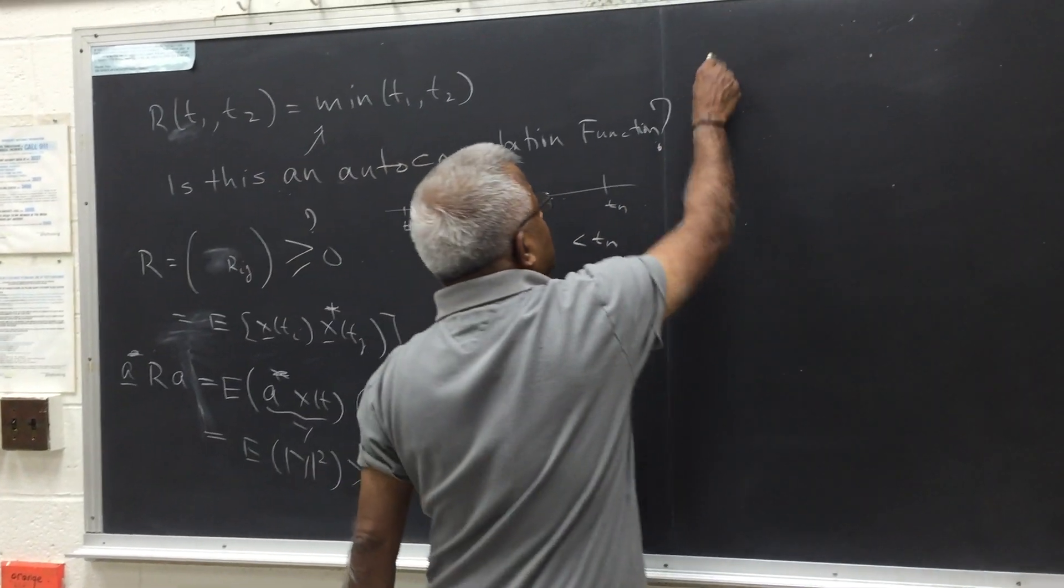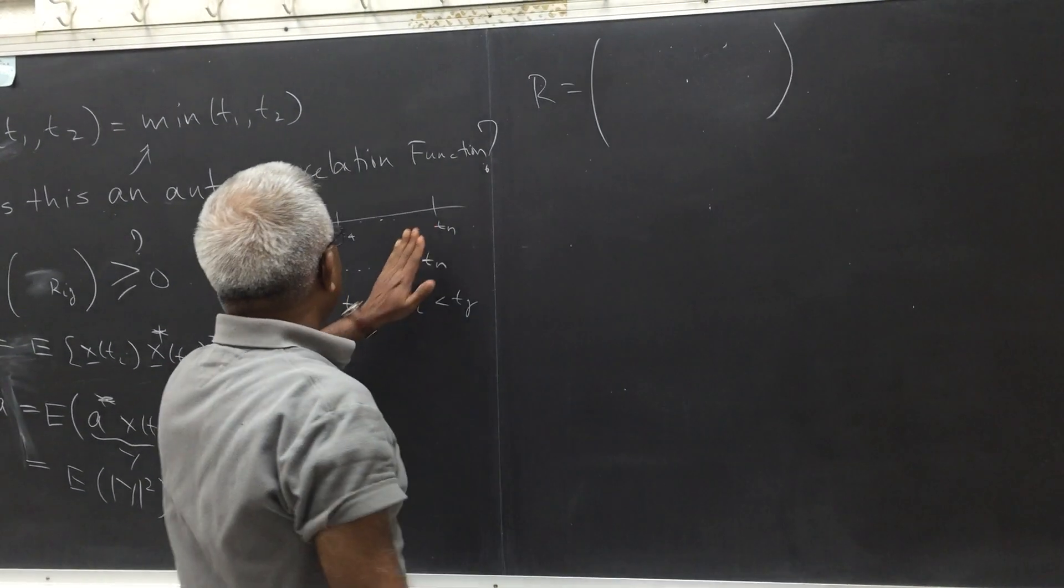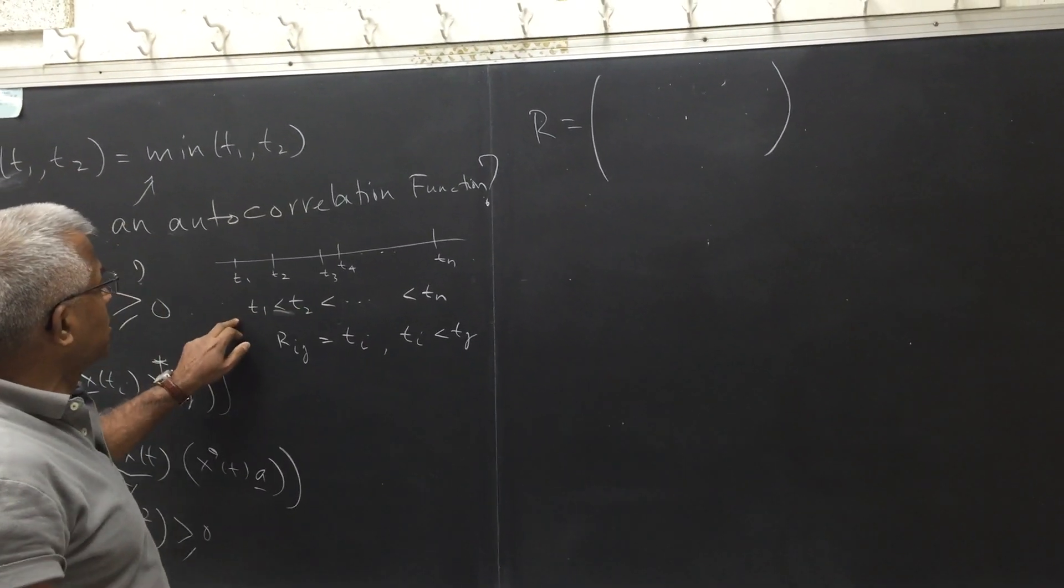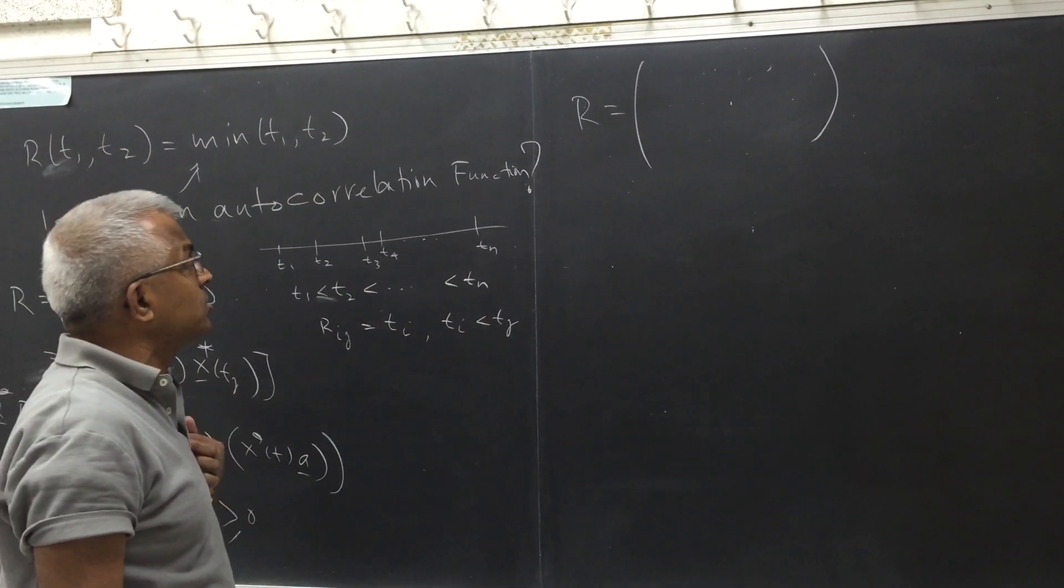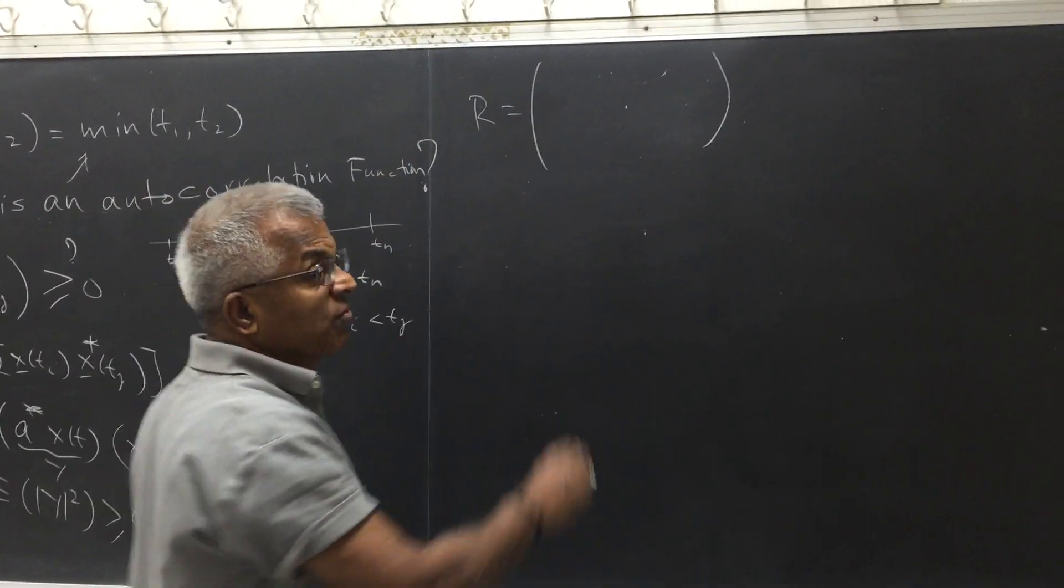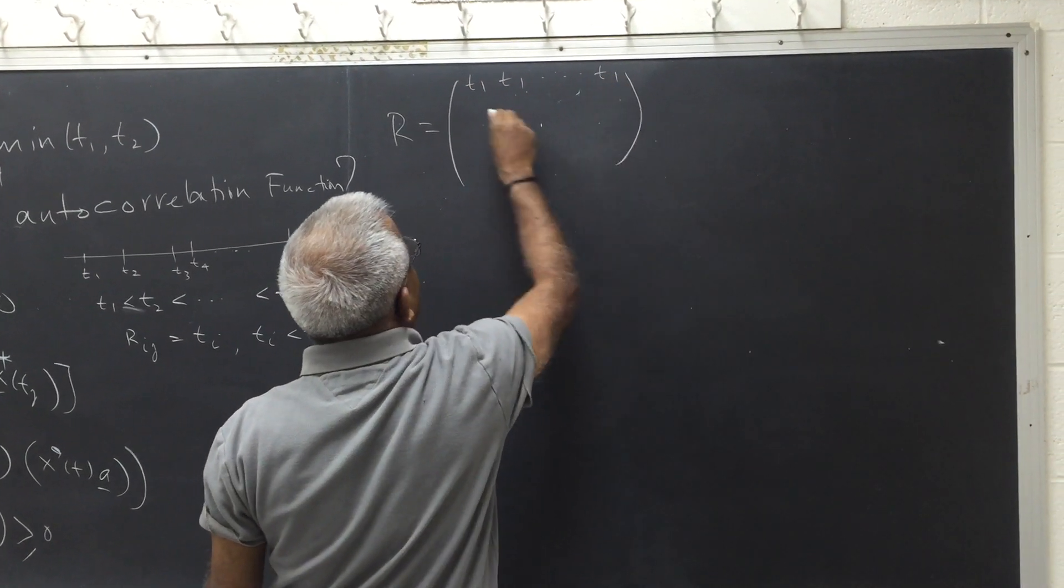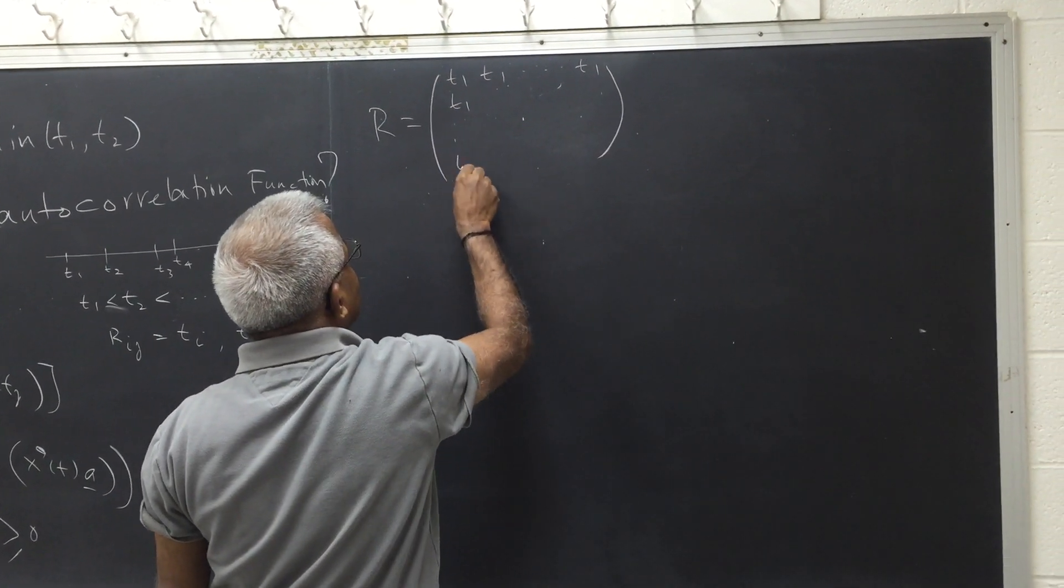So let's construct r. So r is going to be, so let's say t1, t2, tn are ordered in this fashion. t1 is the smallest than t2, tn is the largest. So the minimum of, in the first row and first column is going to be of course t1, because this is the minimum. Here also it will be t1.